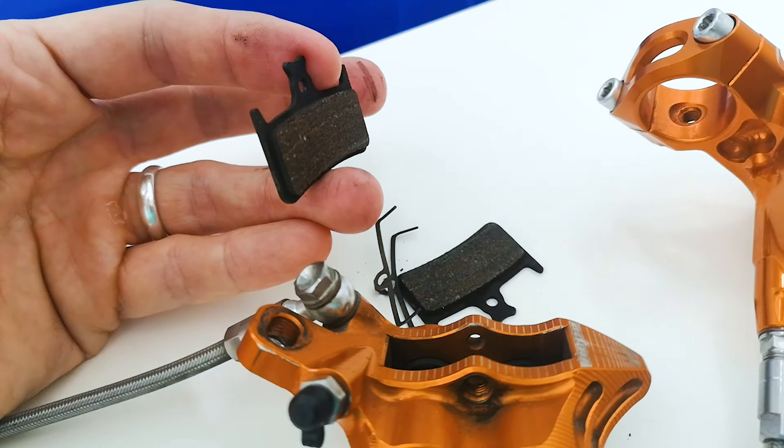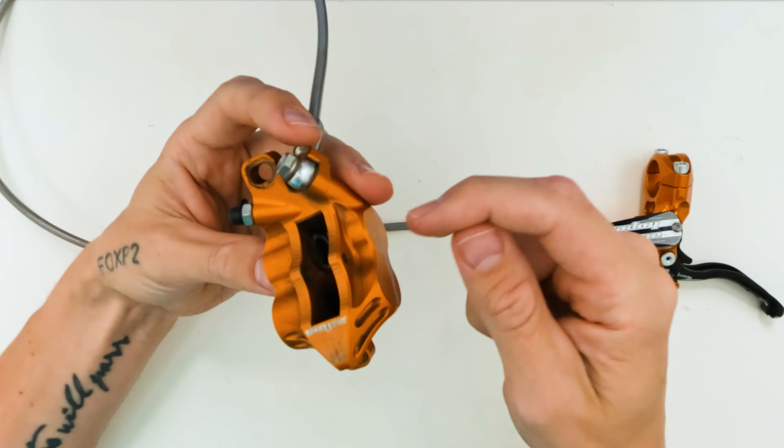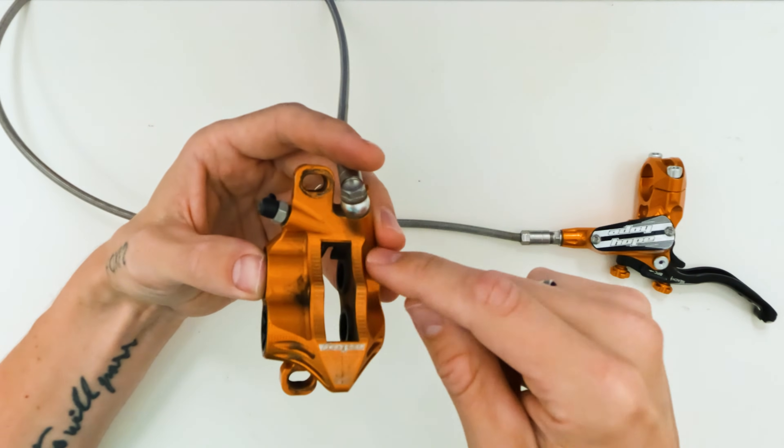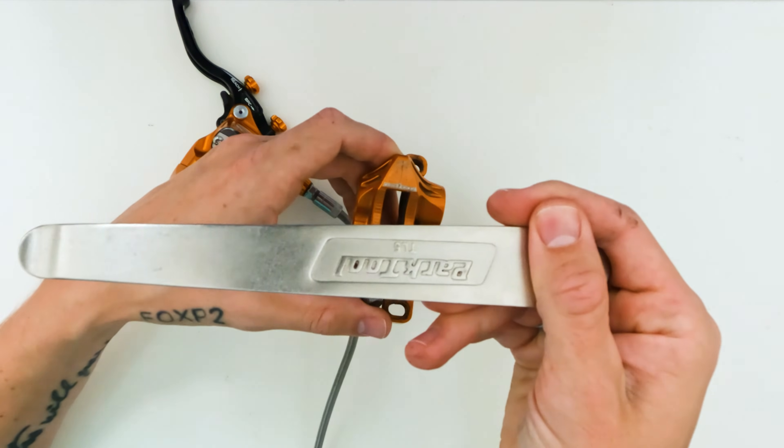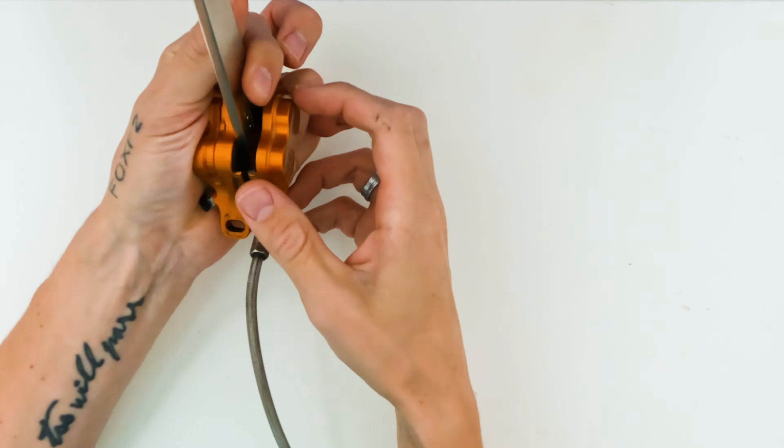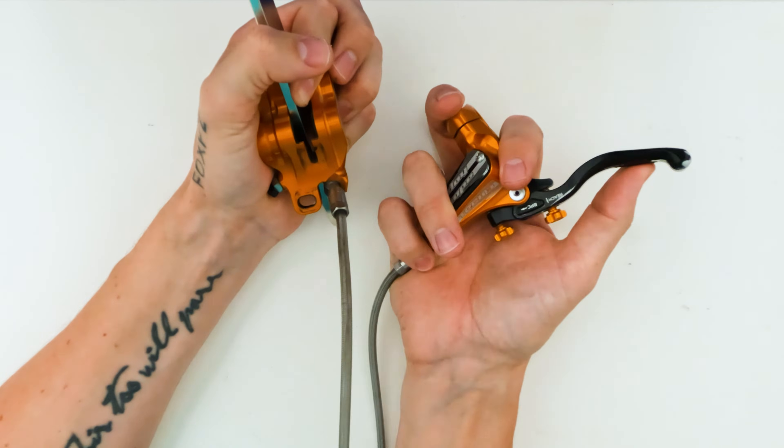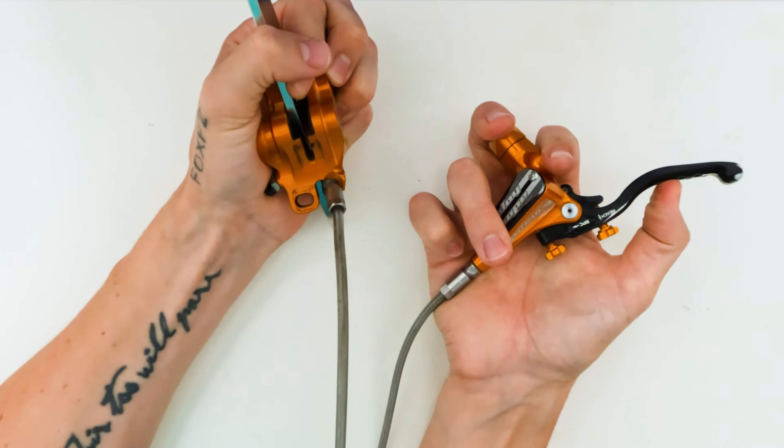We need to push the pistons out. So we want to push this part out first because then we're going to remove the bore caps and then push out these pistons. Just the Park Tool's tire five master blaster. We can just block this side with our hands, pull it, and then just keep pushing the other side out.